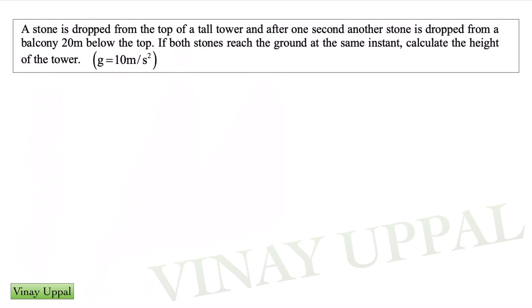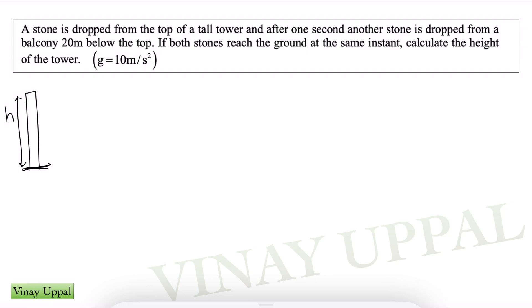A similar question: a stone is dropped from the top of a tall tower and after one second, another stone is dropped from a balcony 20 metres below the top. If both stones reach the ground at the same instant, calculate the height of the tower. Let the height be H. For the first stone: H = ½GT₁², so T₁ = √(2H/G).